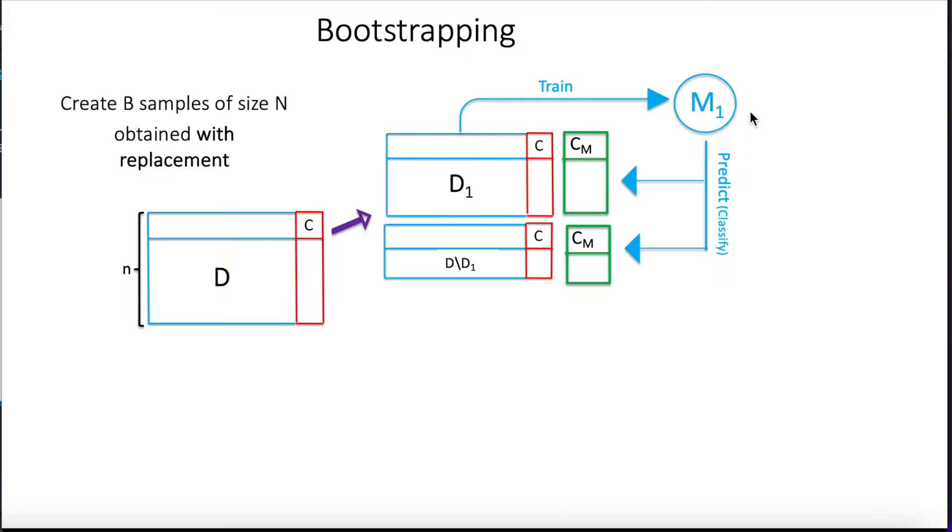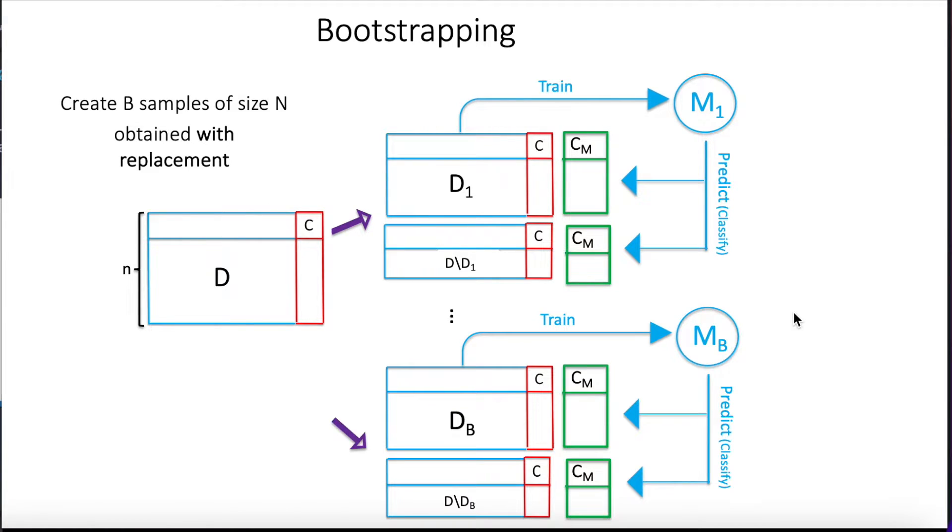And what we do here is we train our model from D1, but we use then our model to predict in both sets. That's another difference. So we make a classification for D1 and also for the instances that were not seen by the classifier. That's a new thing here. And we repeat the same B times. So we create again B rounds with B models that are trained from the first selection of data points, and we test the model in the same set and also in the instances that were not selected.